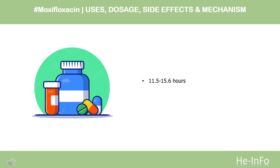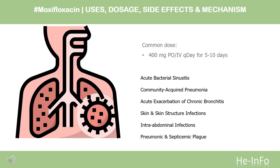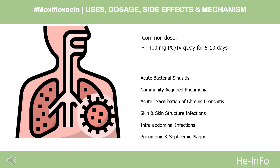Half-life: 11.5–15.6 hours, single-dose oral. Dosing — Acute bacterial sinusitis: 400 mg PO once daily for 5–10 days. Reserve fluoroquinolones for patients who do not have other available treatment options. Community-acquired pneumonia: 400 mg PO once daily for 7–14 days. Acute exacerbation of chronic bronchitis: 400 mg PO once daily for 5 days. Reserve fluoroquinolones for patients without other available treatment options. Uncomplicated skin and skin structure infections: 400 mg PO once daily for 7 days.